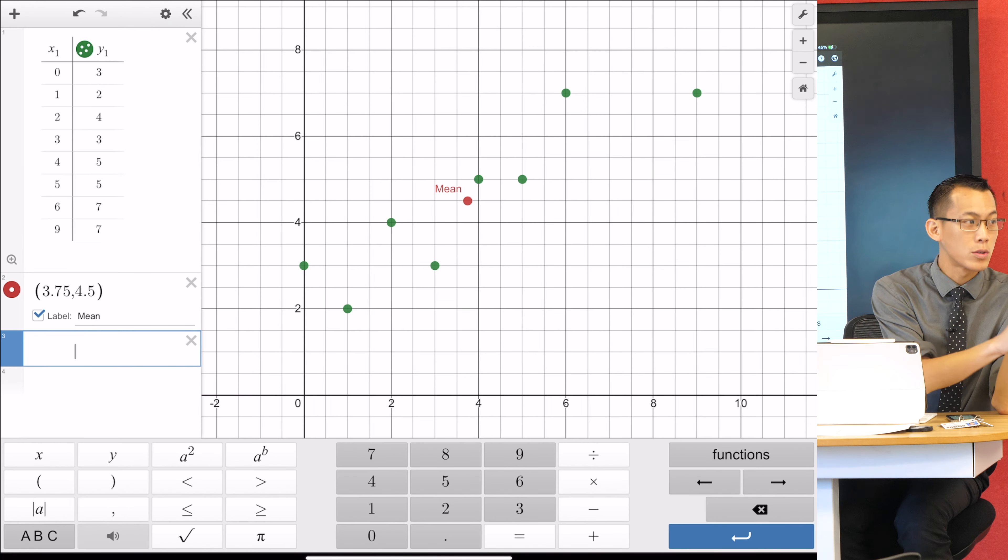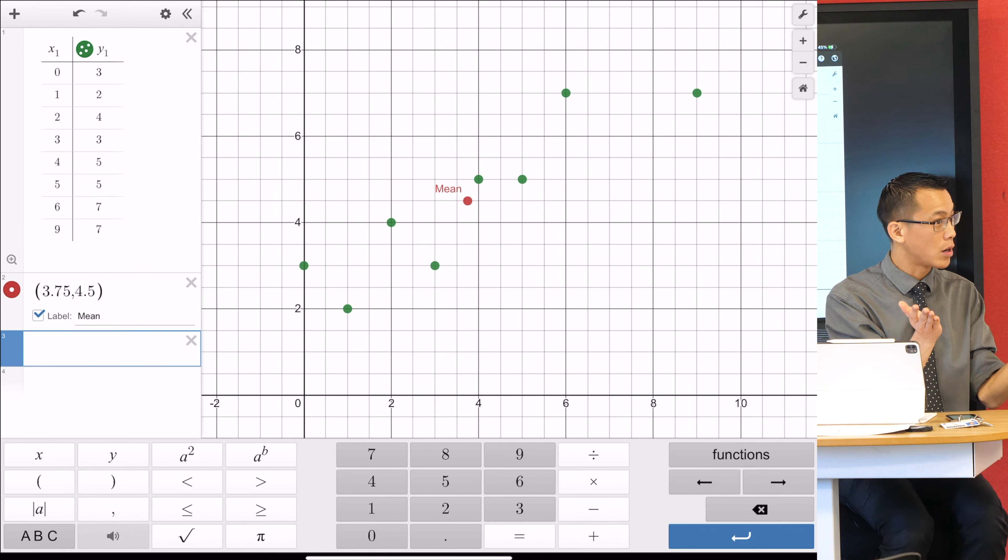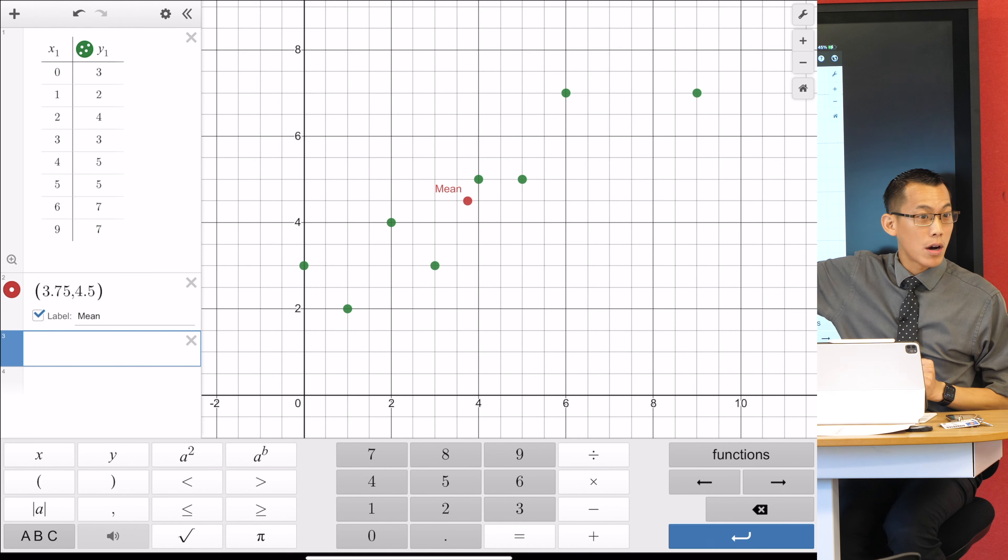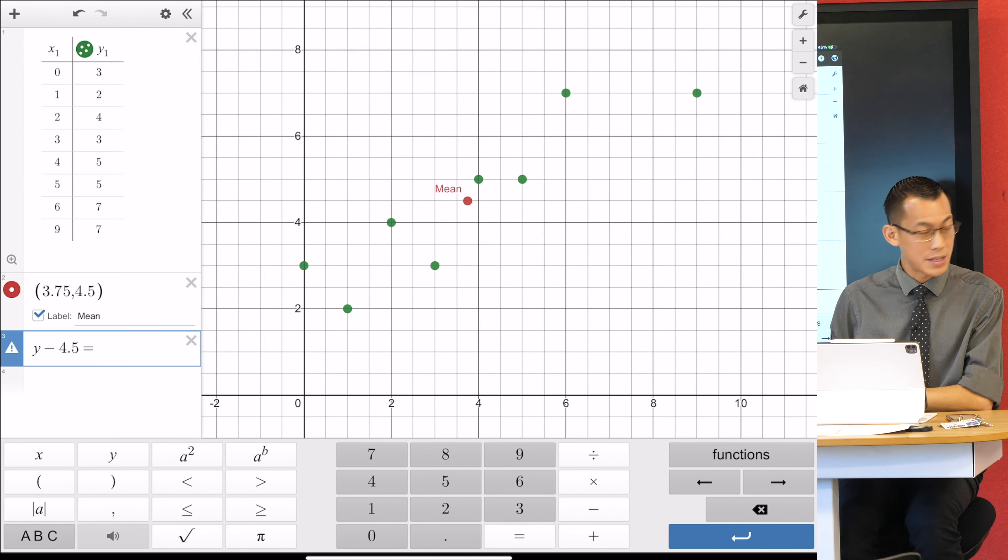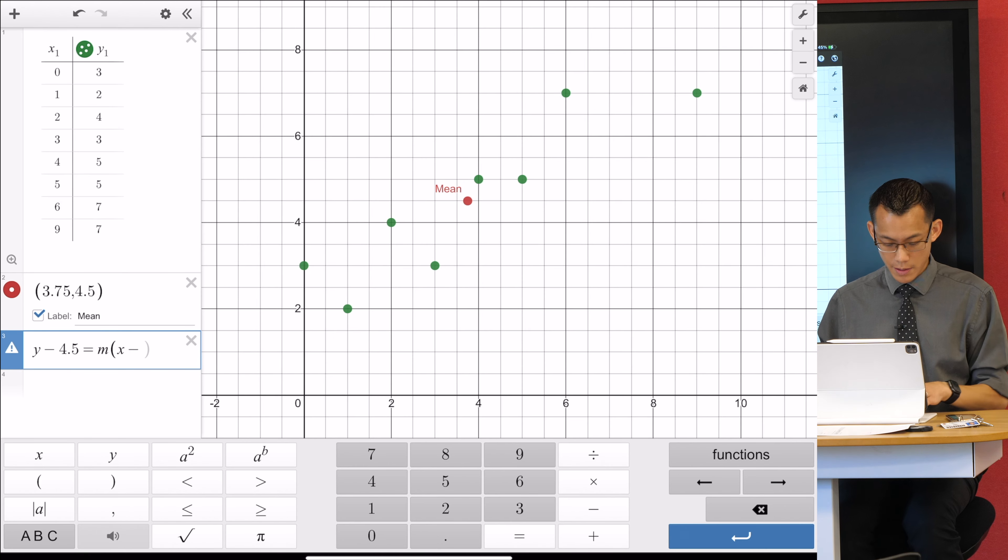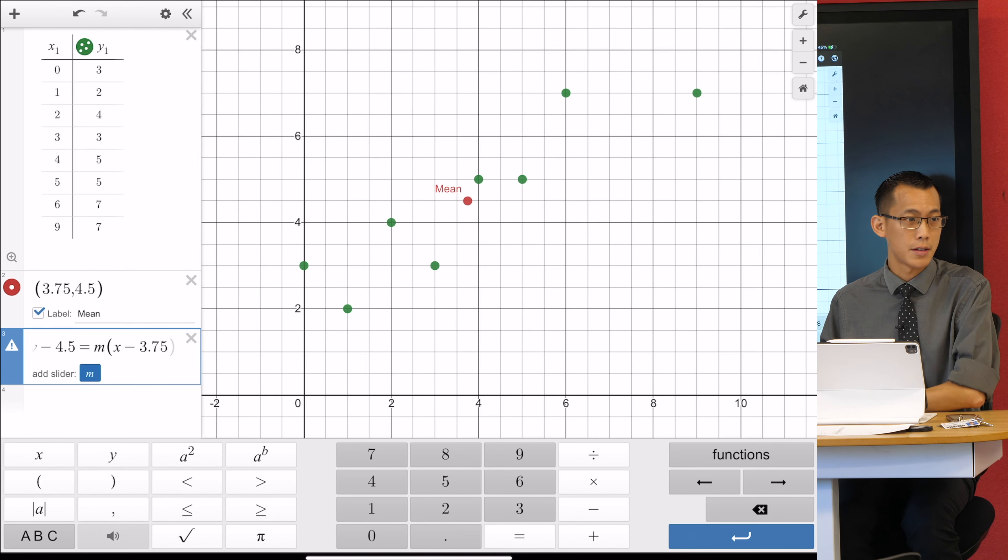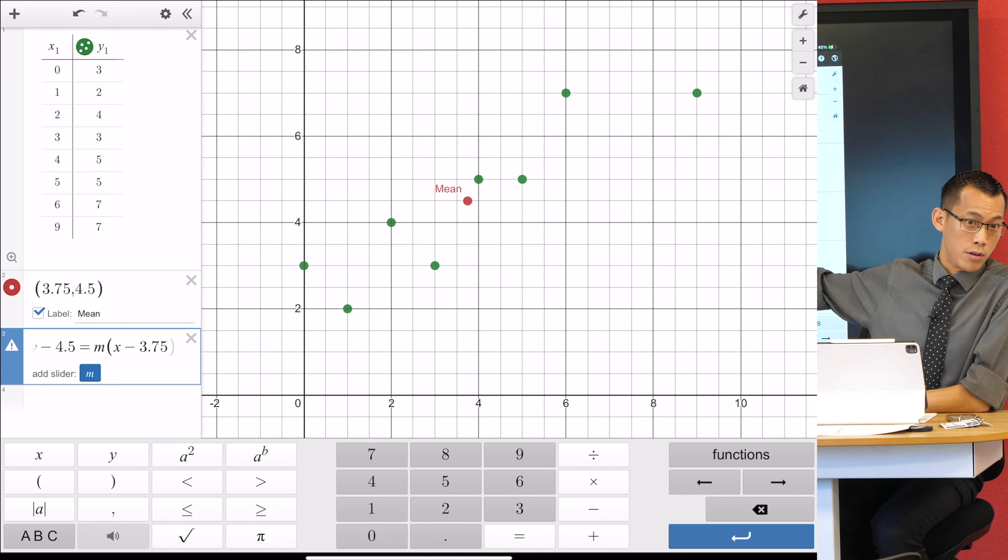So from memory, point gradient form is y minus y1 equals m outside of x minus x1, right? Well, there's your x1 and your y1 right there. So let's go ahead and say y minus y1 in this case is 4.5. It equals, now I don't know the gradient. The whole point is I've got to try and put my ruler up against the page. We've got something better than the ruler. We've got Desmos. That gradient is unknown. So I'm just going to call it m. And then here comes x minus and the x1 you told me was 3.75. Now, as usual, Desmos is prompting you. Do you want to add a slider for m? Yeah, we do.